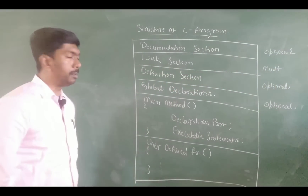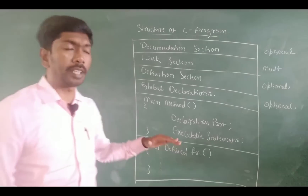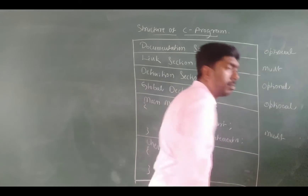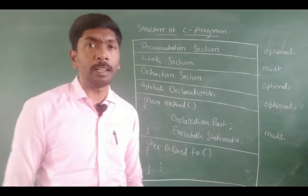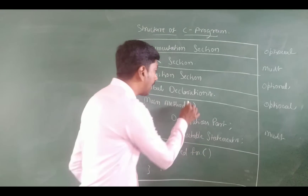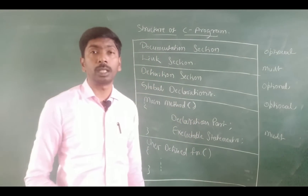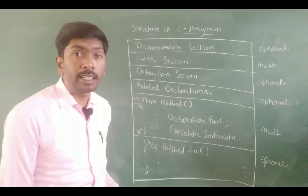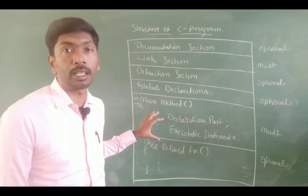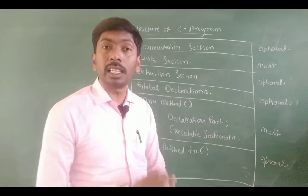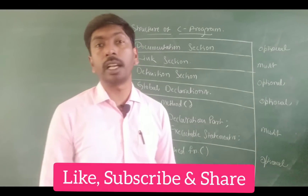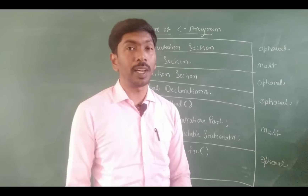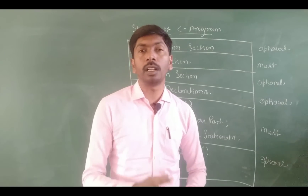Next, coming to the main method — very important. The main method is a must. Without the main function, the program will not execute. Control first takes execution from the main method — that is where execution starts. If nothing is written in the main method, control does not take execution. That is why the main method is the heart of the program.